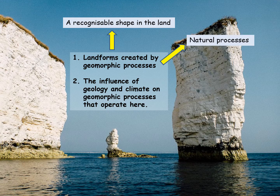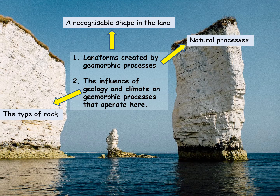Natural processes are also called geomorphic processes — don't worry about that word, it just means what nature is doing. Geology means the type of rock. Here we're mainly looking at whether rocks are harder and more resistant, or softer and weaker — whether they'll fall away through the action of geomorphic processes.